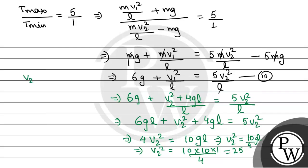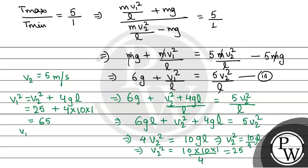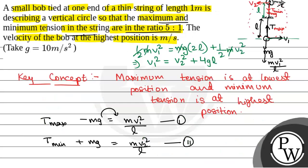From here, v2 equals 5 meter per second. Also, v1² equals v2² plus 4gL equals 25 plus 4 times 10 times 1 equals 65, so v1 equals root 65 meter per second. We have been asked for the velocity of the bob at the highest point, which is v2, so that is 5 meter per second. The final answer is 5. Hope you all understood it well. Best of luck.